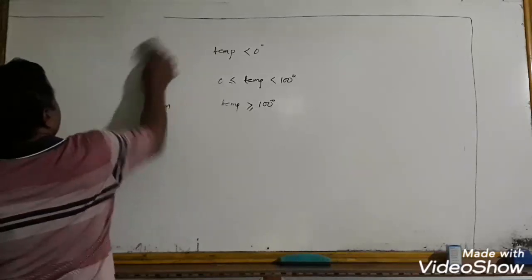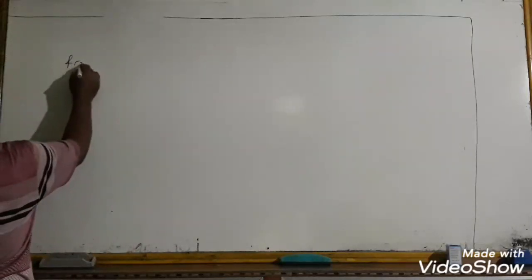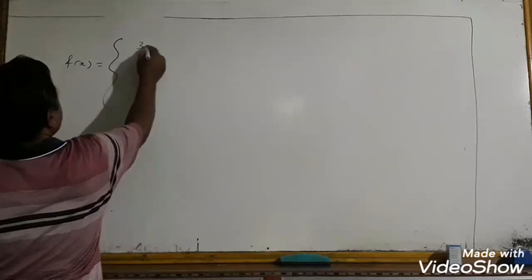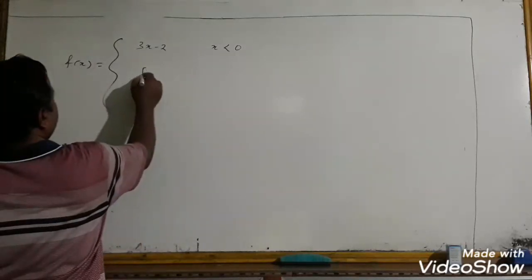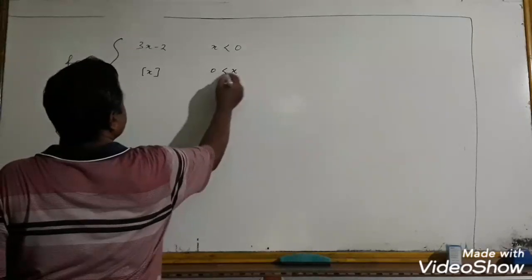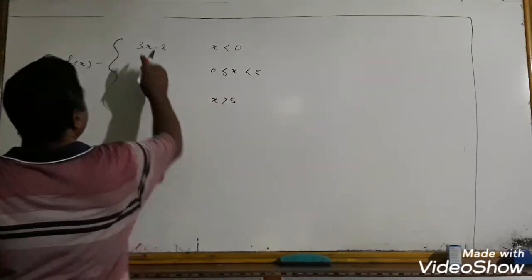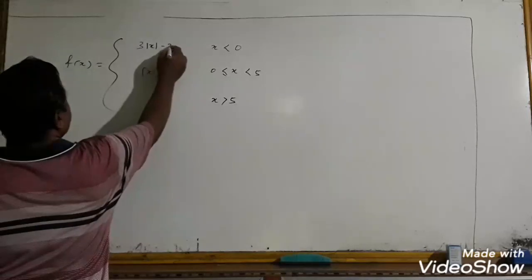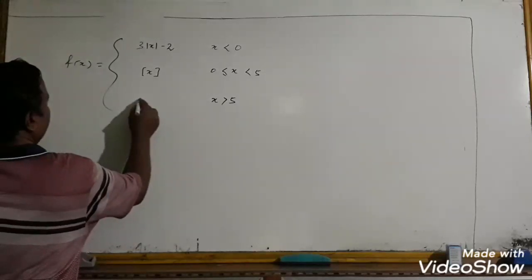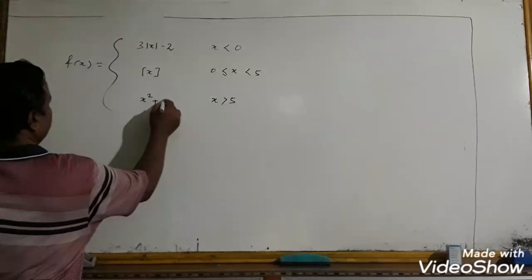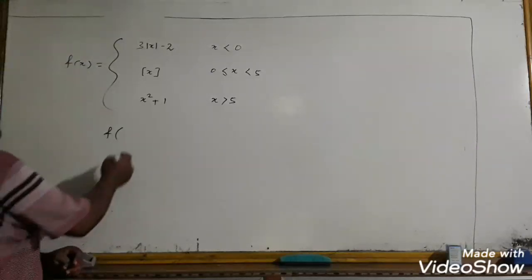Here is an example of a conditional (piecewise) function: f(x) = 3x − 2 when x < 0; f(x) = x when 0 < x < 5; f(x) = x² + 1 when x > 5. For example, what is f(8)? Since 8 > 5, we use the third condition: f(8) = 8² + 1 = 65.